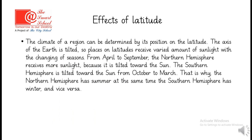The climate of a region can be determined by its position on the latitude. The axis of the Earth is tilted, so places on latitudes receive varied amount of sunlight with the changing of seasons. From April to September, the Northern Hemisphere receives more sunlight because it is tilted towards the sun. The Southern Hemisphere is tilted towards the sun from October to March. That's why the Northern Hemisphere has summer at the same time the Southern Hemisphere has winter and vice versa.